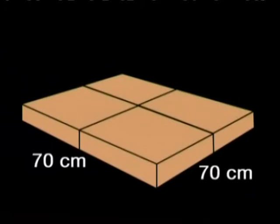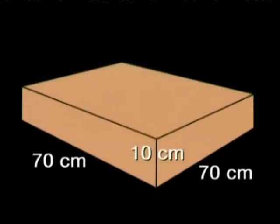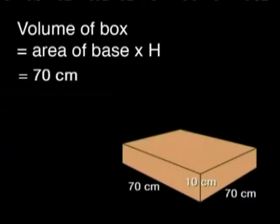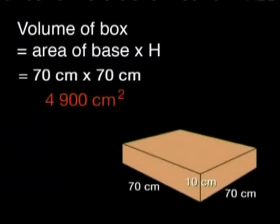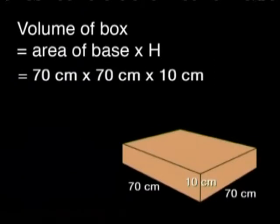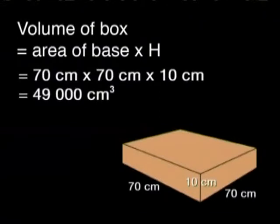Right, let's put this to the test. This length will be twice 35 centimeters, which is 70 centimeters. This length will also be 70 centimeters and this height will be twice 5 centimeters, which is 10 centimeters. The area of the base will be 70 centimeters times 70 centimeters. That gives us 4,900 centimeters squared. Then we can multiply by the height of 10 centimeters so we get 49,000 centimeters cubed.